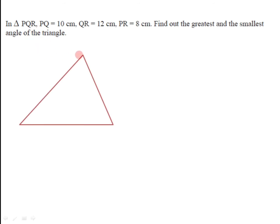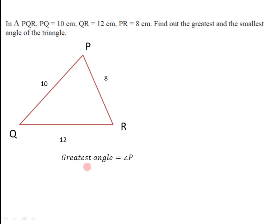Let us draw a diagram — triangle PQR where PQ is 10 cm, QR is 12 cm, and PR is 8 cm. We have to choose the greatest side to find the greatest angle, because for any triangle, the angle opposite to the greatest side is the greatest. Out of PQ, QR, and PR, side QR is the greatest side, so the angle opposite to it — angle P — is the greatest angle.